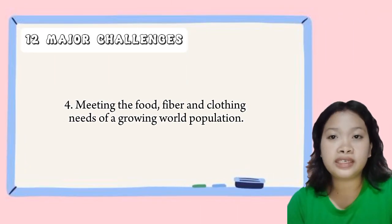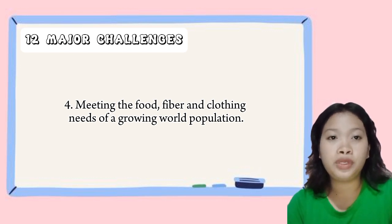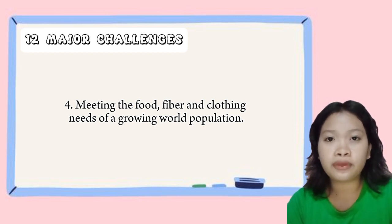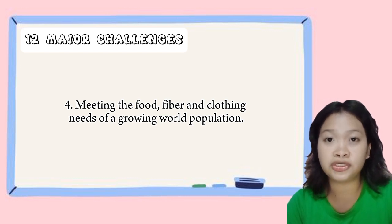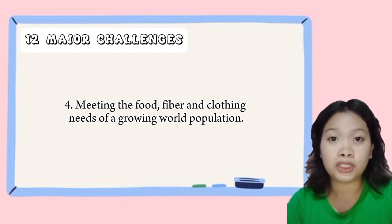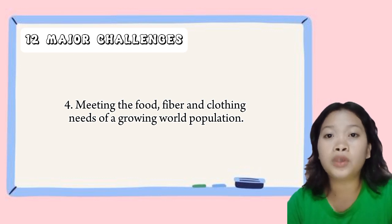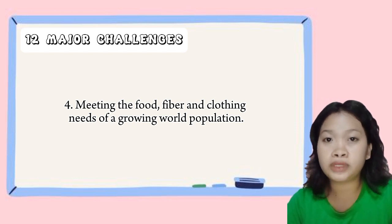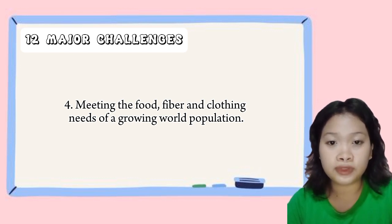Next is food, fiber, and clothing. Meeting the needs of a growing world population for food, fiber, and clothing is a major challenge as it requires balancing the needs of people with the needs of the environment. The need to increase agricultural productivity to feed a growing world population is significant. Intensive farming practices can have negative environmental impacts including soil erosion, water pollution, and greenhouse gas emissions. Sustainable methods for producing food, fiber, and clothing are needed to reduce these impacts.